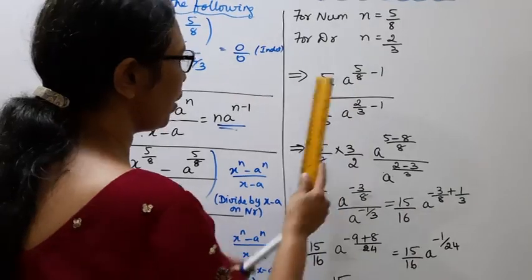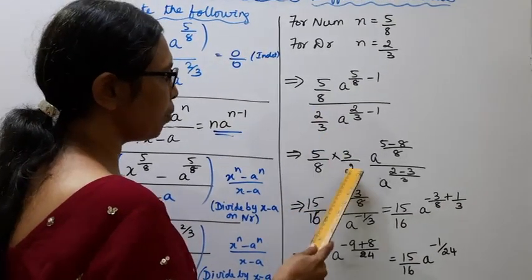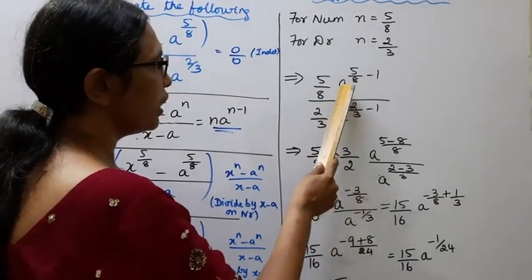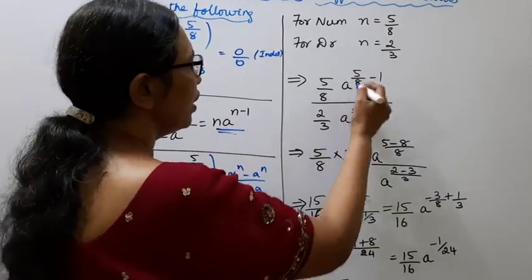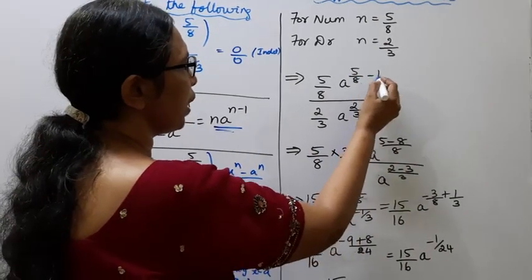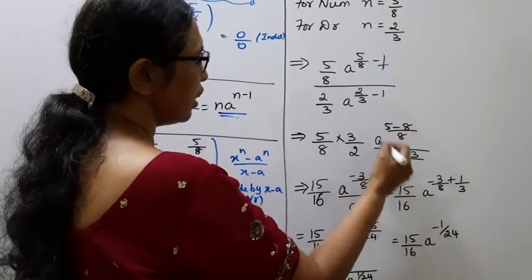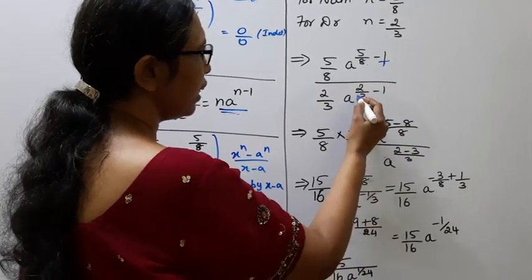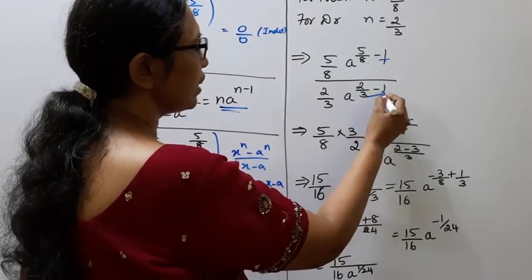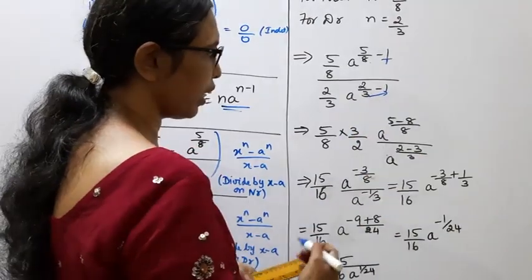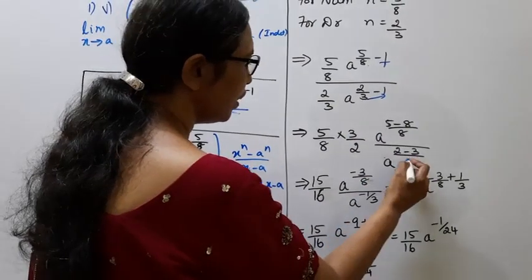If 5 by 8, then 2 by 3, we convert: 3 by 2 times a power (5 minus 8 divided by 8) divided by a power (2 minus 3 divided by 3). Now, 5 by 3 is 15, 8 by 2 is 16. So we have a power (minus 3 by 8) divided by a power (minus 1 by 3).